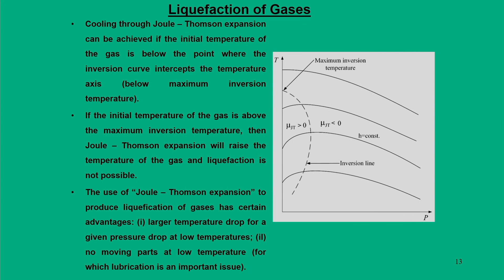This concept is extended for liquefaction of gases. An important consideration is that we should get a cooling effect. Cooling through Joule-Thomson expansion can be achieved if the initial temperature of the gas is below the maximum inversion temperature — where the inversion curve intersects the temperature axis. If the initial temperature is above the maximum inversion temperature, the Joule-Thomson effect will raise the temperature of the gas and liquefaction is not possible.